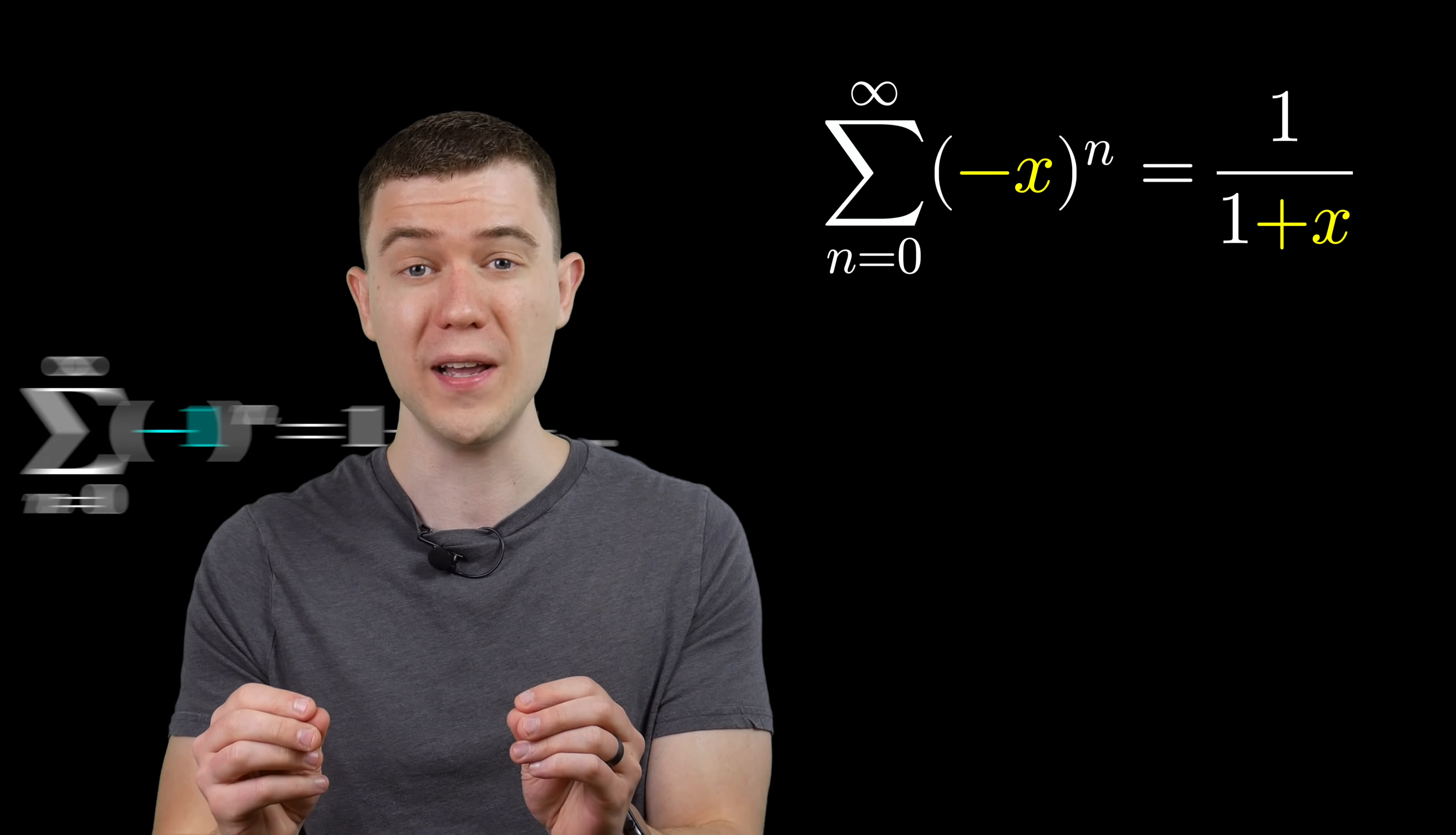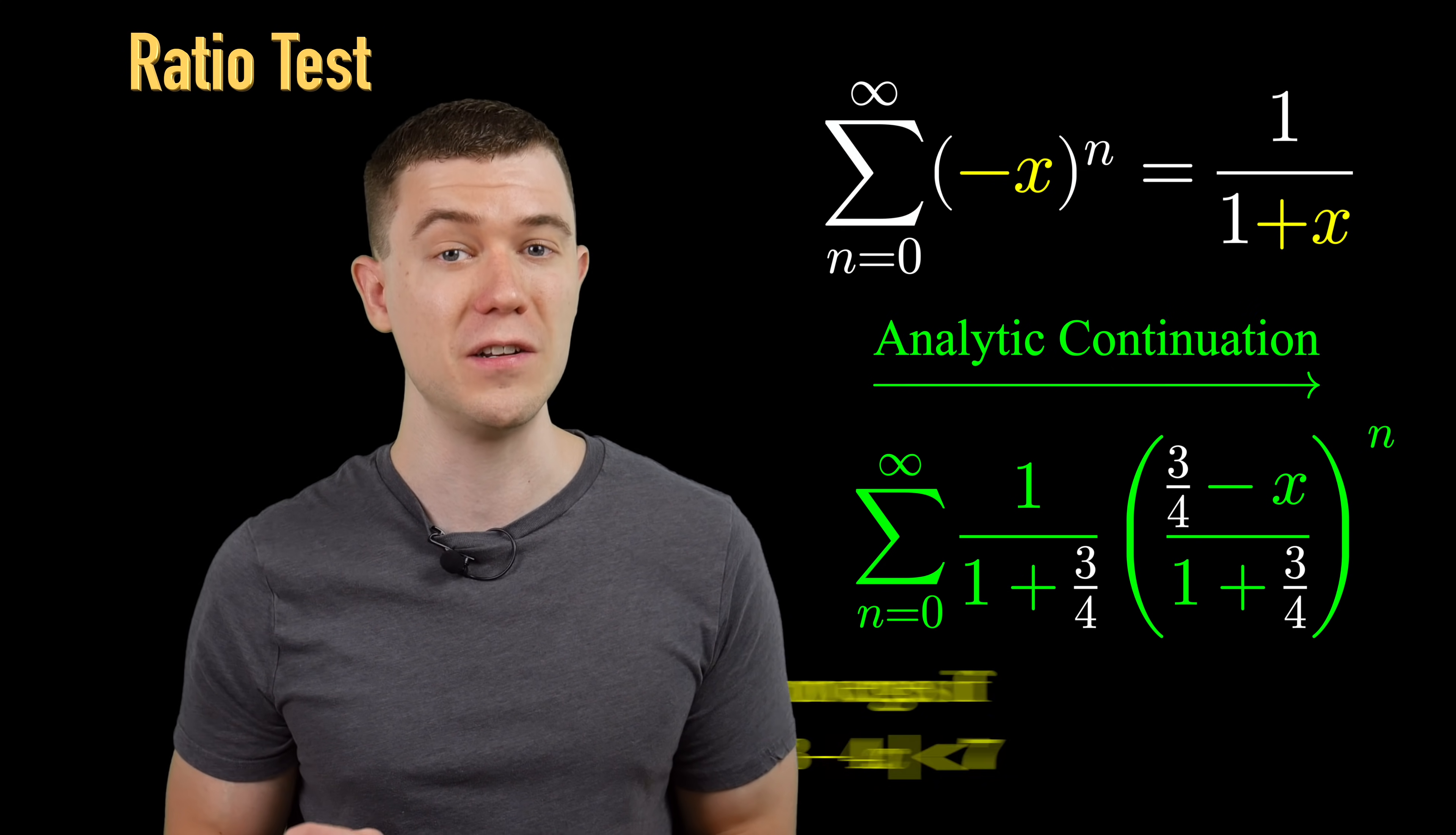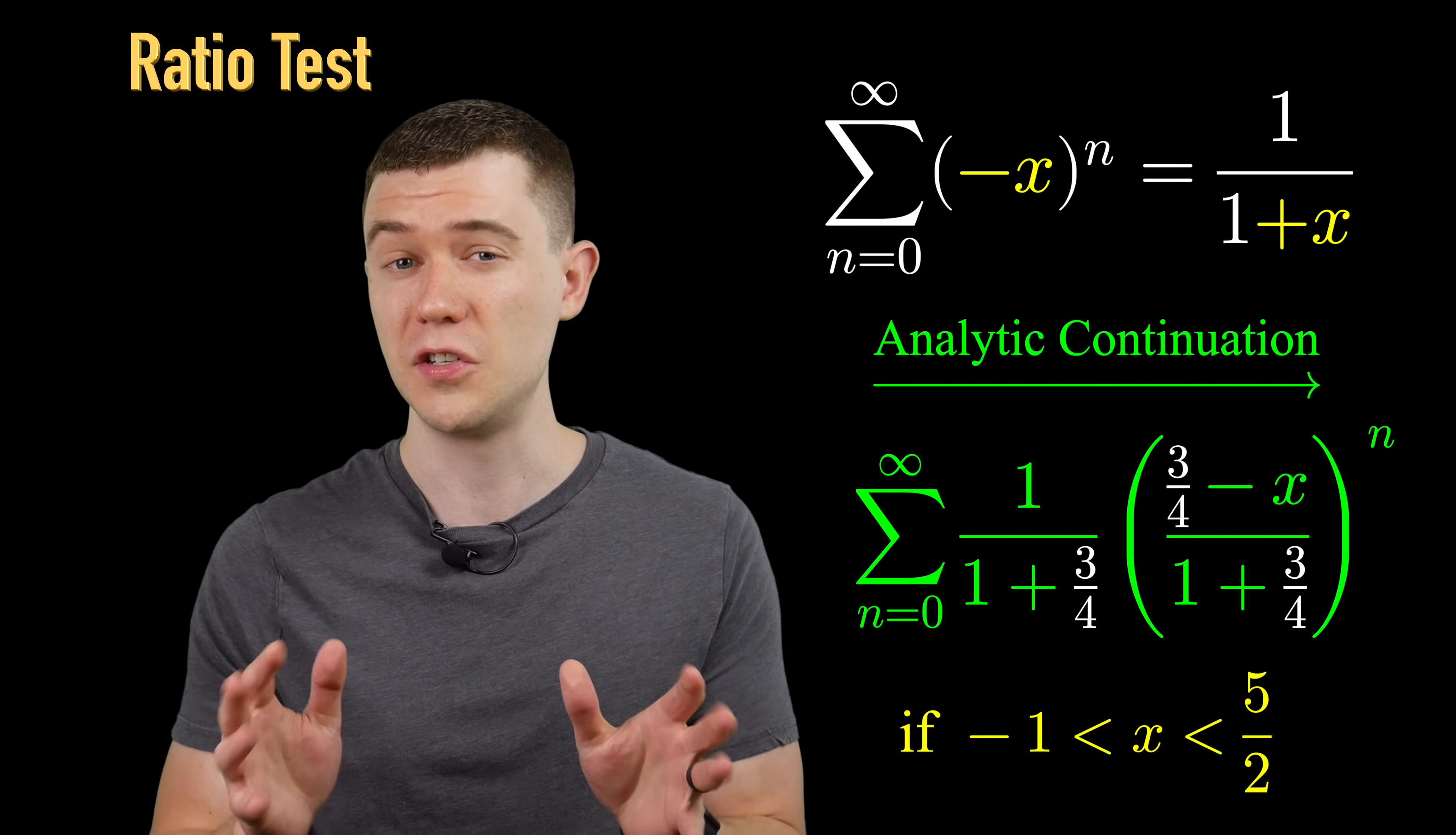We want our interval of convergence to be around x equals one. Why one? Well, that's because if we substitute one into this, we get our Grandi series. So we should probably pick a to be something close to one. There's many choices we could use here. Let's use three quarters. If we substitute three fourths for a and do a ratio test to see what the interval of convergence is, we see that x equals one is indeed inside this interval. So we're all good.